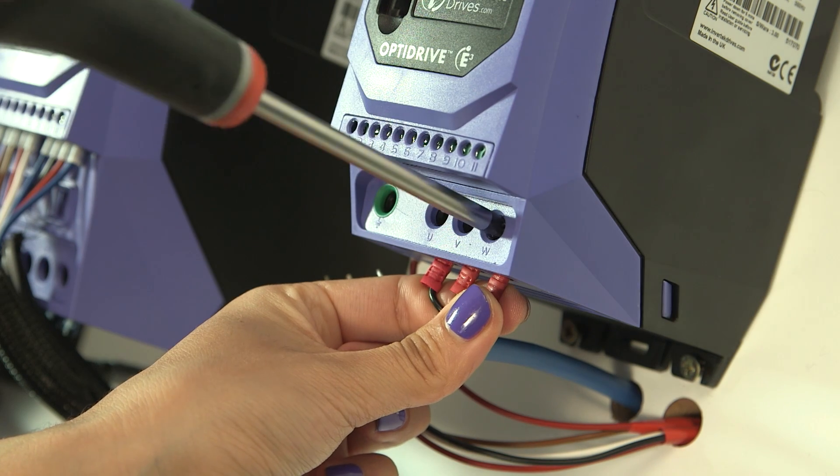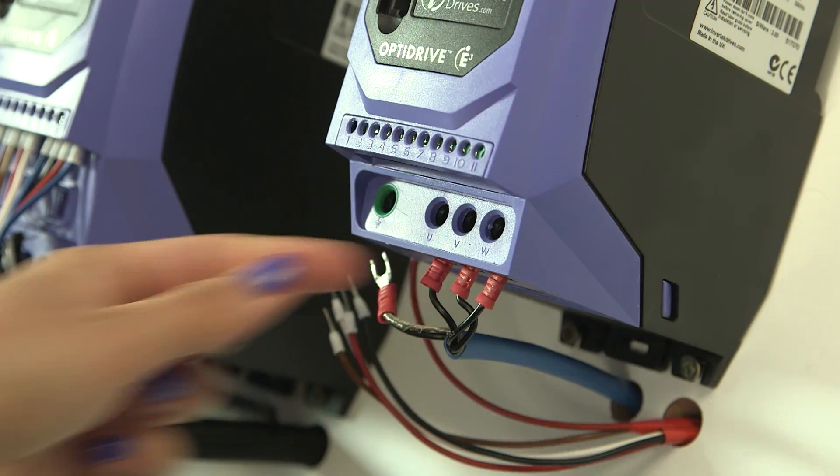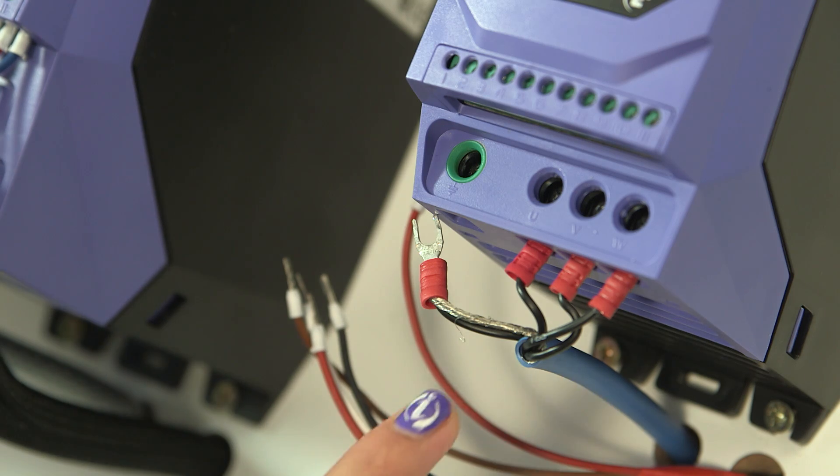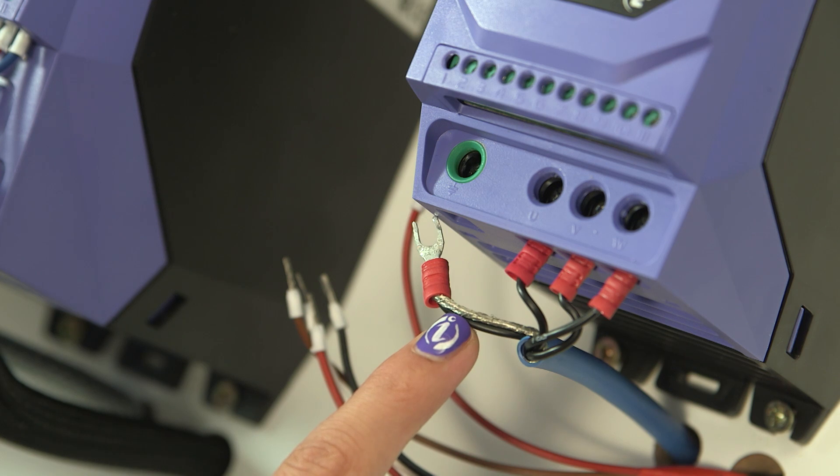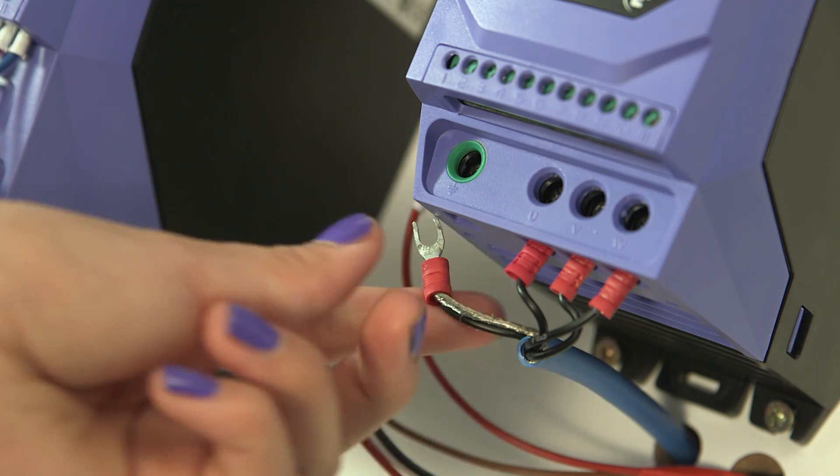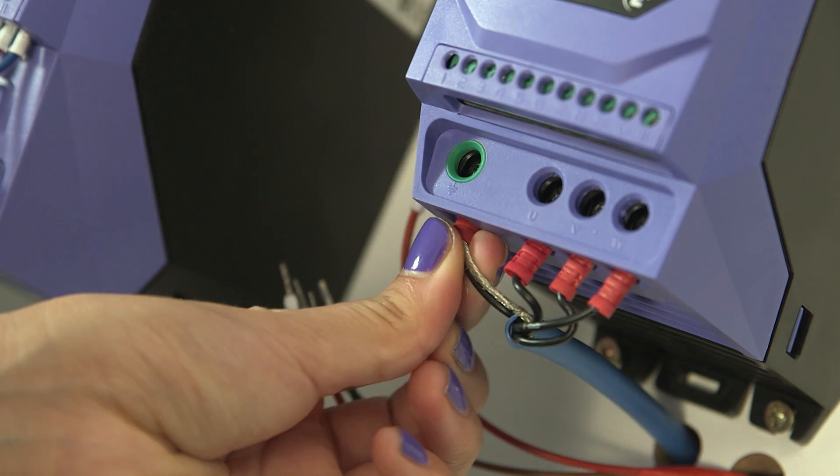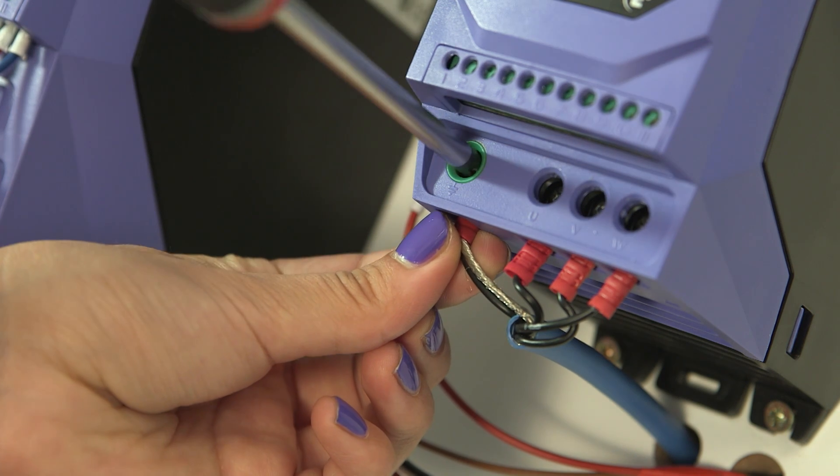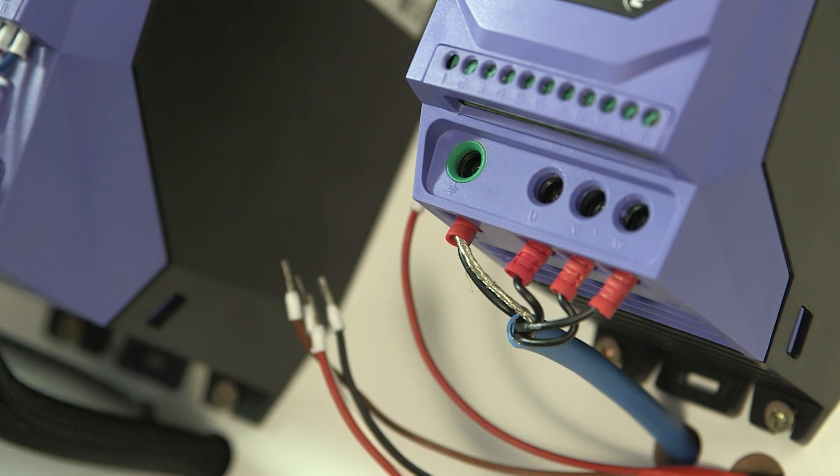The motor will run clockwise looking on shaft if correctly connected. Always use screened cable from the drive to the motor, because the high voltage and high switching frequencies in this cable can easily cause interference. Earth the motor locally and through the cable connection as well as the screen.